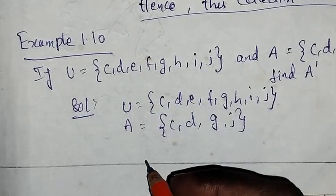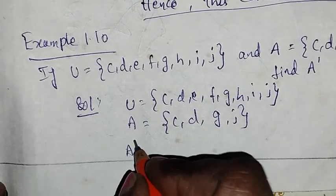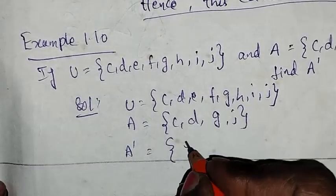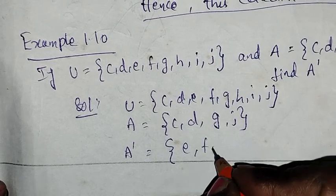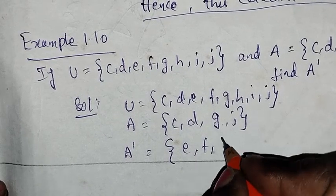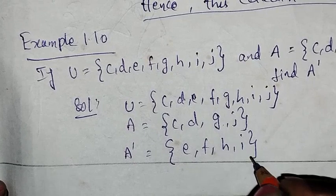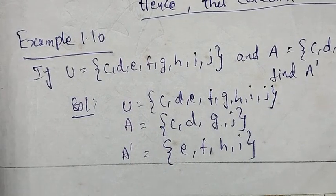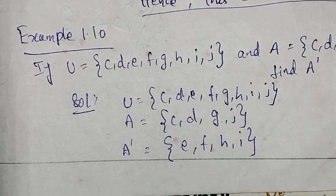So find A'. A = {c, d, g, j}, therefore A' = {e, f, h, i}. That's all, it's A'.